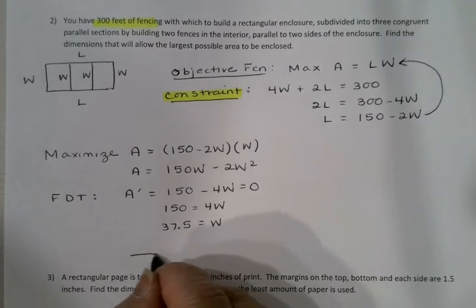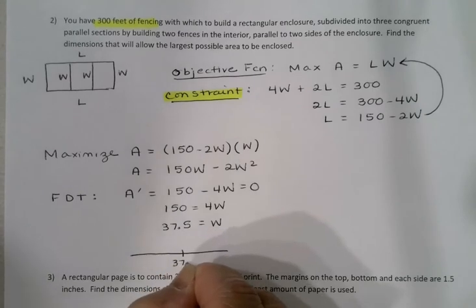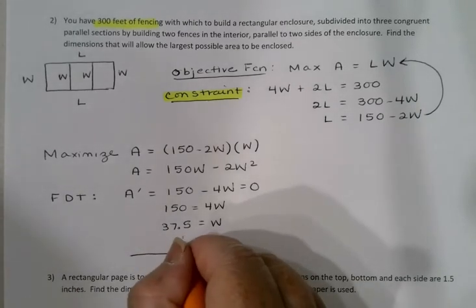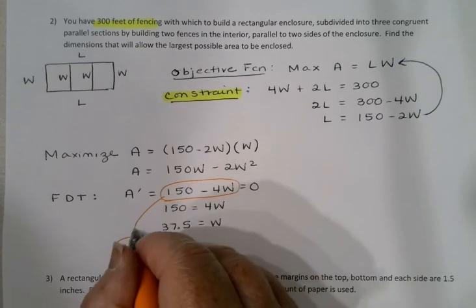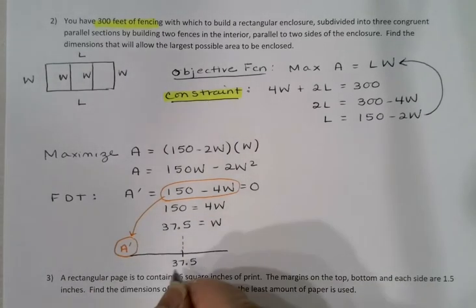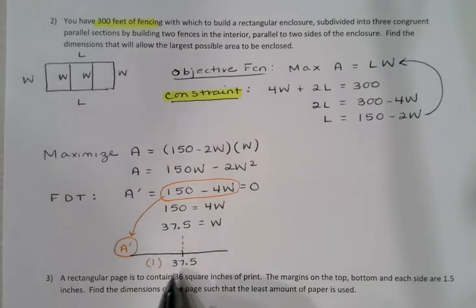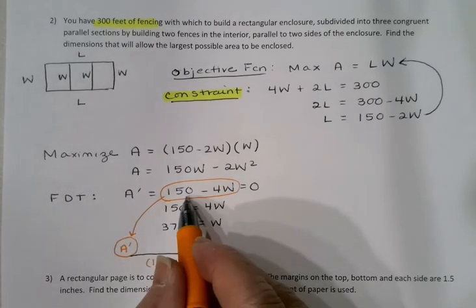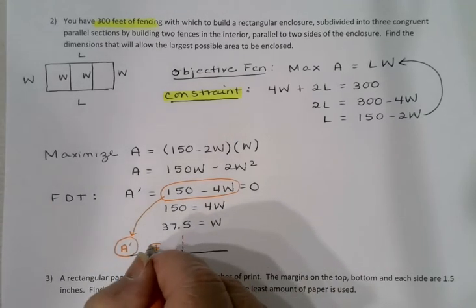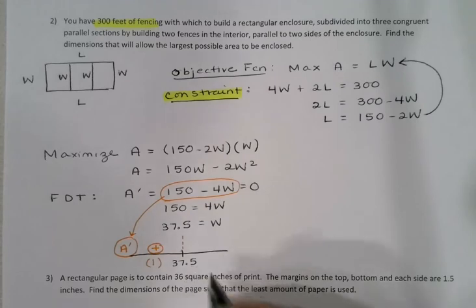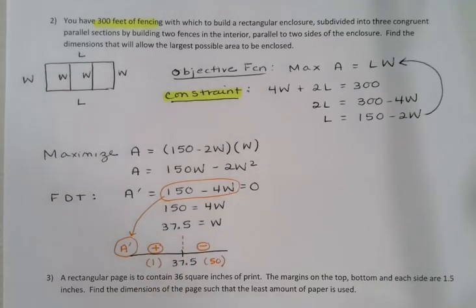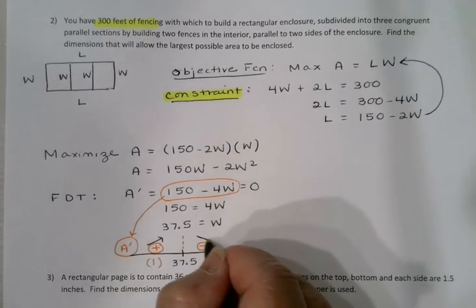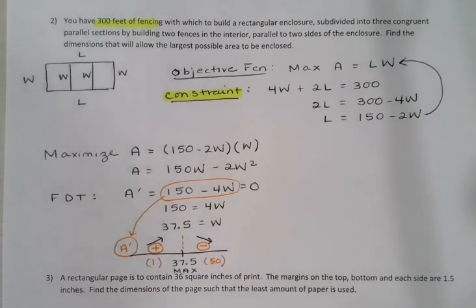And again I can just do a really quick check to make sure that's really a maximum. I can actually take a really simple test value like 1. Anything less than 37.5 will do. Clearly 150 - 1 would be positive. And then I could take something larger than 37.5, maybe 50. That would make that 200. 150 - 200 is definitely negative. So increasing, decreasing, and we've verified that it truly is a maximum again.